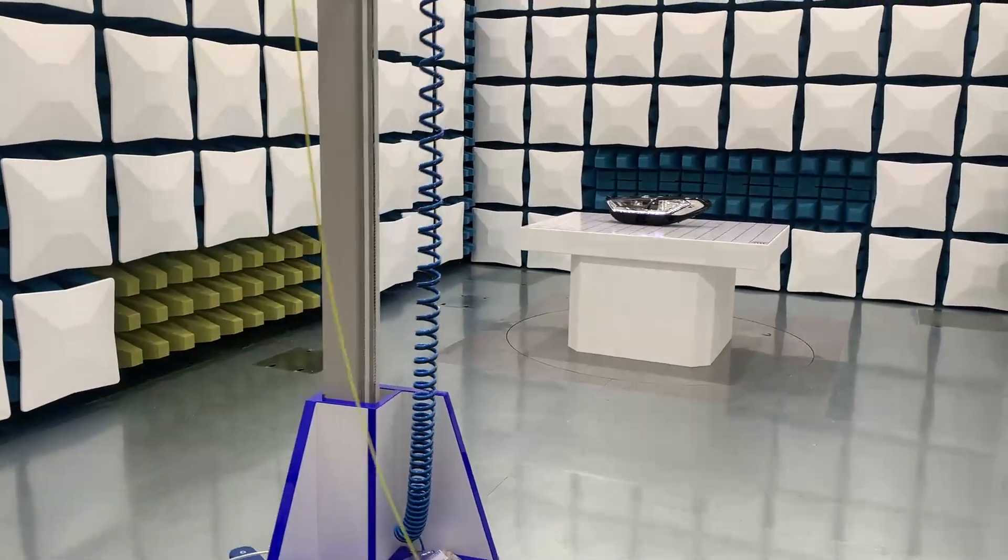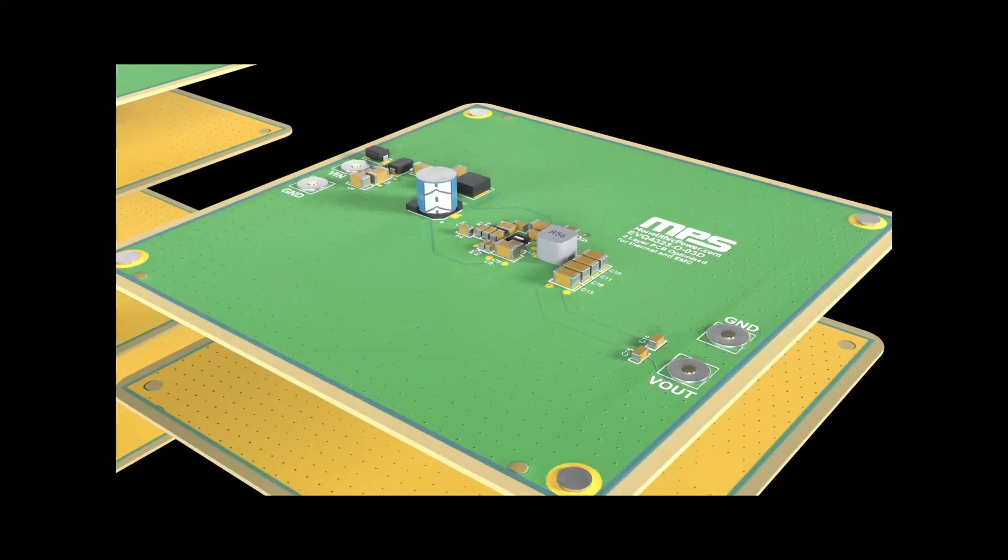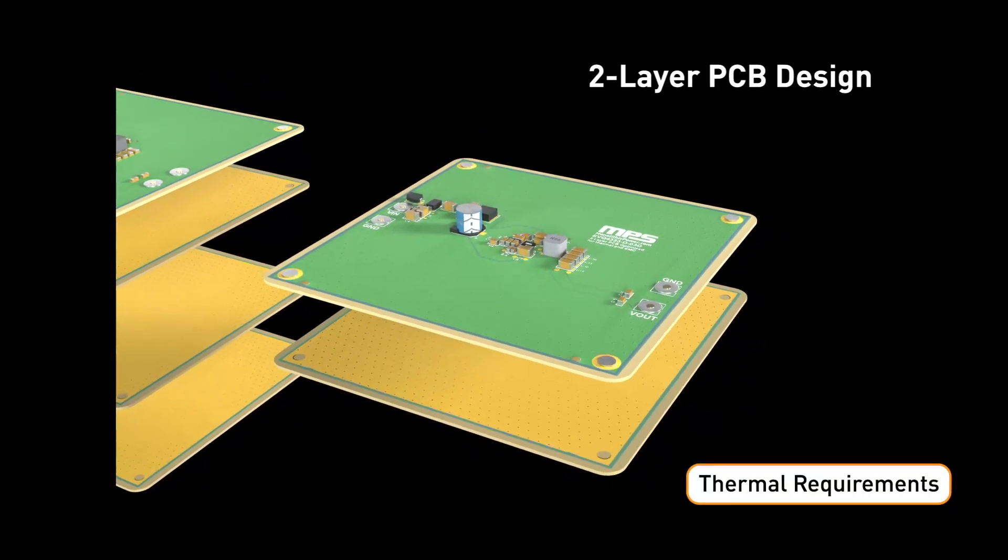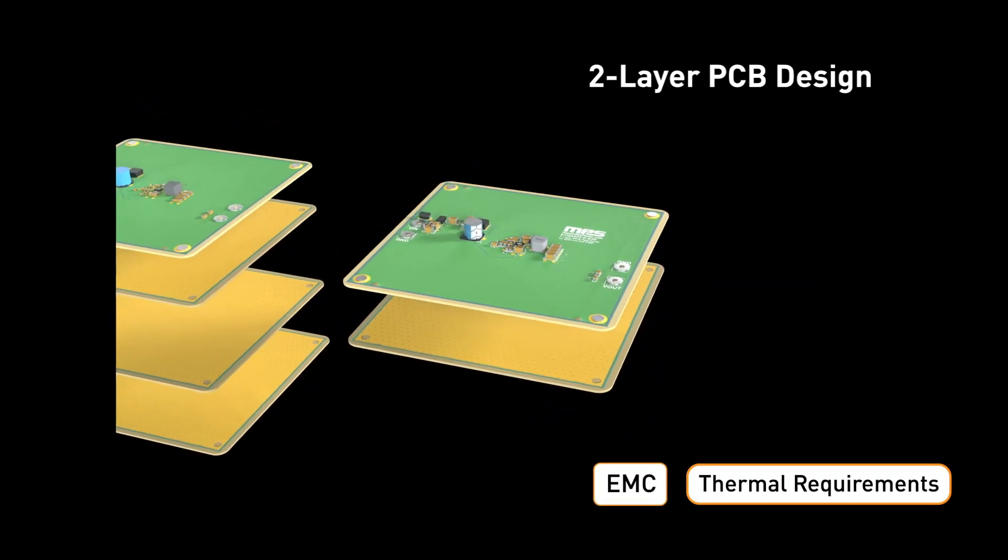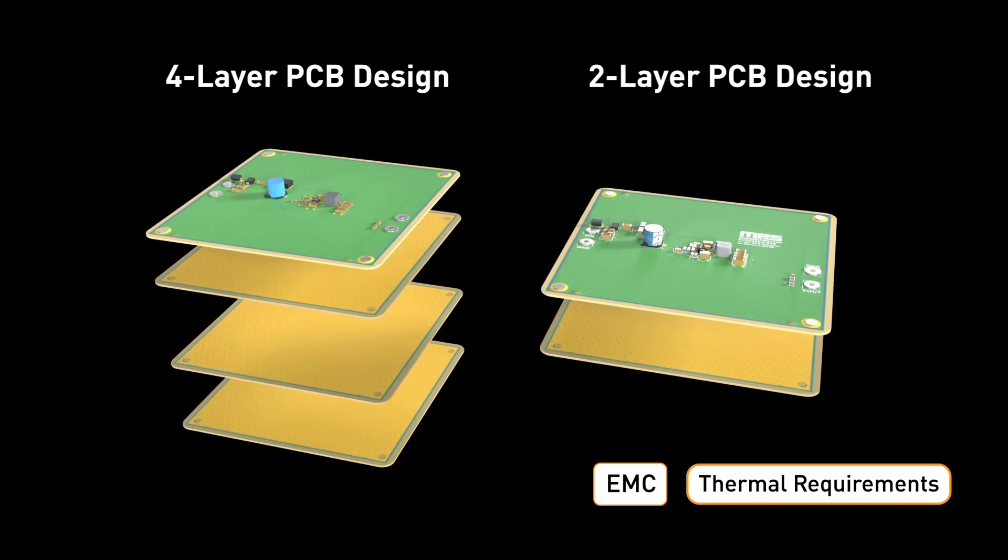As suppliers seek out ways to reduce costs and save critical space in applications, this video will demonstrate how a two-layer PCB can be optimized for thermal and EMC requirements. Four-layer layouts offer flexibility and performance but also increase costs. A two-layer PCB layout is more cost effective, but it can have poor thermal characteristics, which leads to compromised performance.